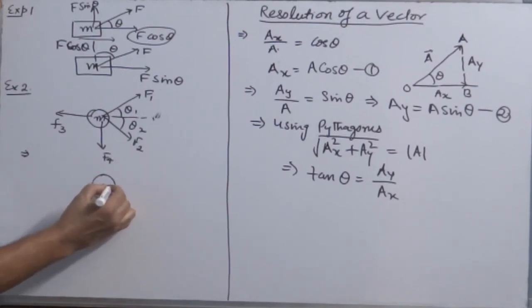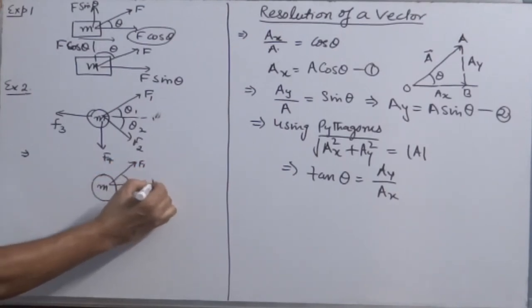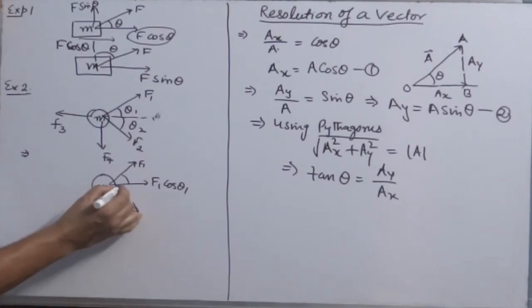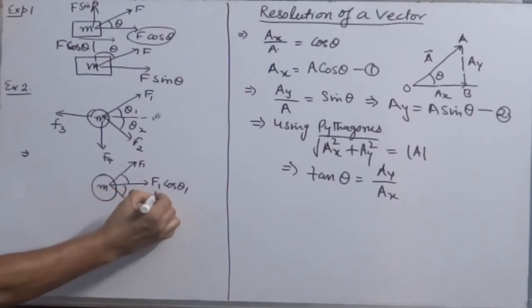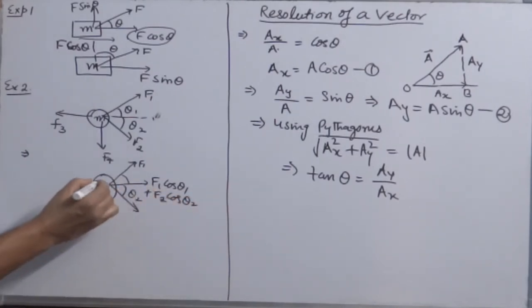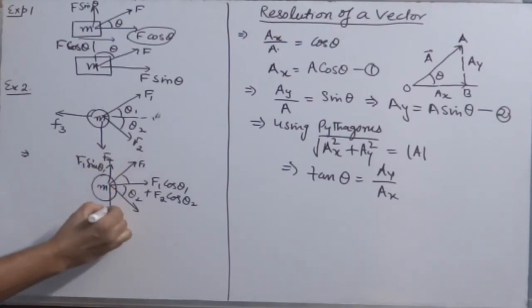Body of mass M. Resolving F1. F1 direction is this. So along this direction, you will have component F1 cos theta 1. Because of vector F2, you will have another component, this direction that is F2 cos theta 2 plus F1 sin theta 1 up.